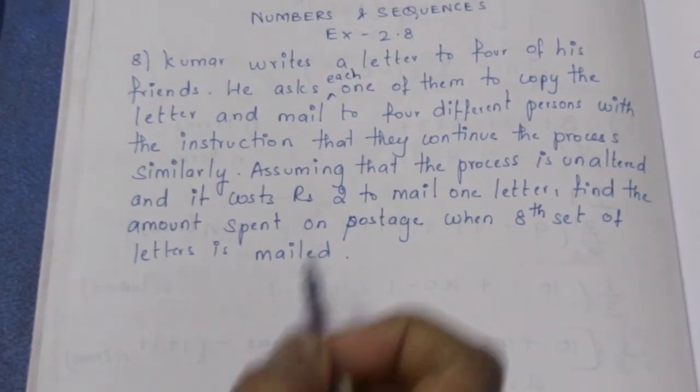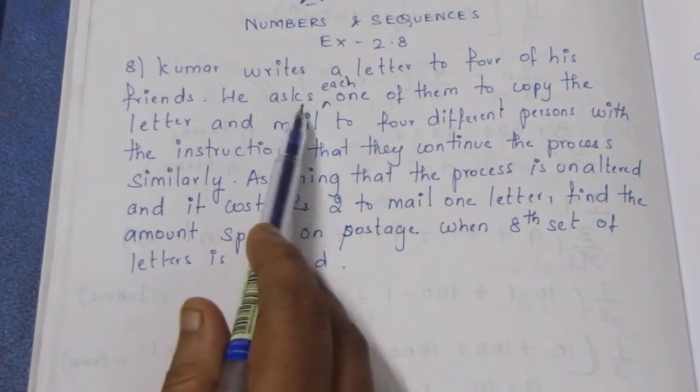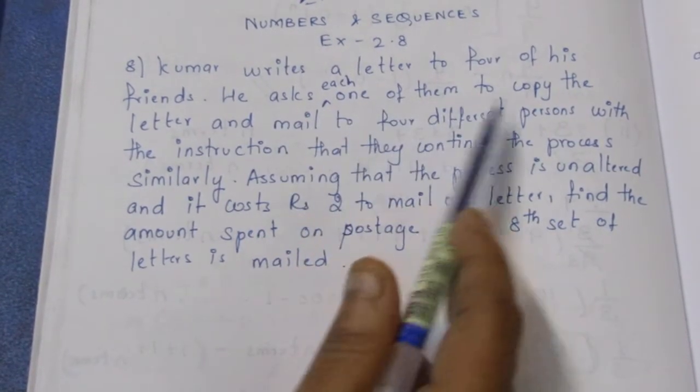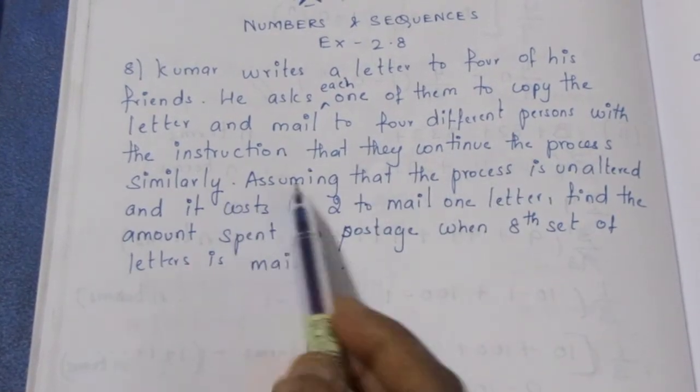Let's see the question. Kumar writes a letter to 4 of his friends. He asks each one of them to copy the letter and mail to 4 different persons with the instruction that they continue the process similarly.